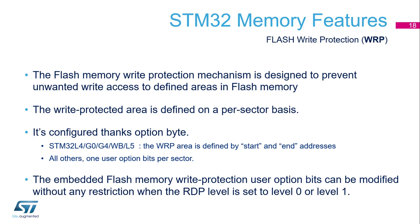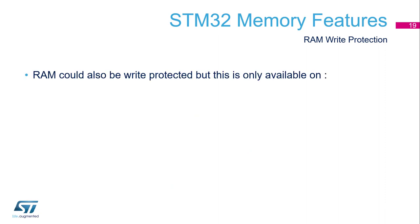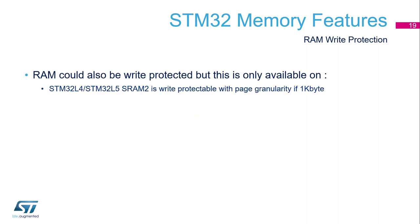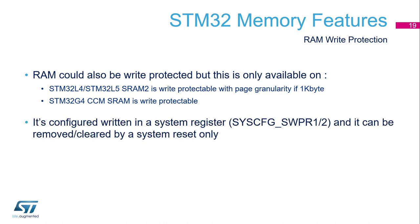A similar mechanism exists for RAM write protection. It's available on L4 and L5, which can protect SRAM2, and also on G4, which can protect CCMSR AM. In this case, it's configured via a system register, so it requires code to enable — unlike the static option byte approach. It is removed by a simple reset, so you have to re-enable it each time you need it.